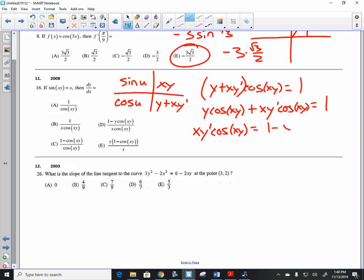1 minus y cosine of x, y. Then divide, and I get y prime is equal to 1 minus y cosine of x, y, all over x cosine of x, y.